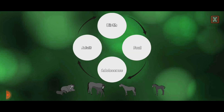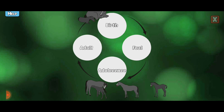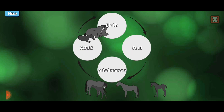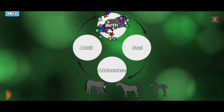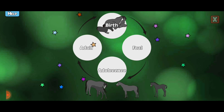Complete the horse life cycle. Mares will gestate for 11 months and after birth the newborn can stand within a couple hours.